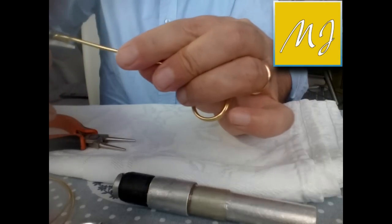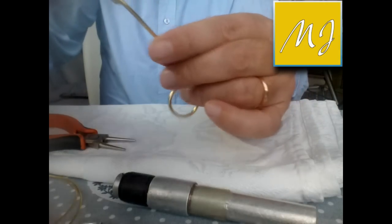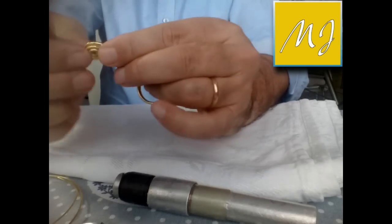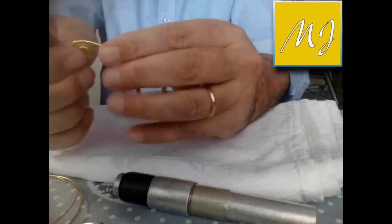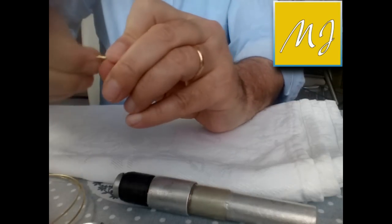Dopo aver modellato i primi giri in maniera da mantenere la circonferenza, si può finire a mano direttamente perché il filo, come ho detto, è molto morbido.